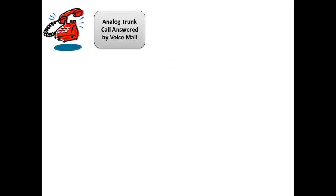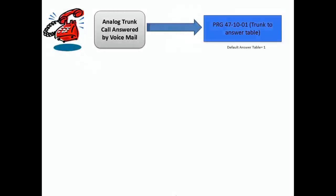An inbound analog trunk call is routed to the voicemail. The first place the system will check is program 4710-01 to determine which answer table the trunk is assigned to. Each trunk can be assigned to one of 16 different answer tables. You would assign trunks to different answer tables when trunks are to have separate schedules — for example, the trunks for company A are answered with the day greeting from 8 to 5, but the trunks from company B are answered with the day greeting from 9 to 6.